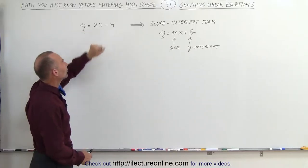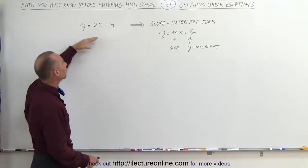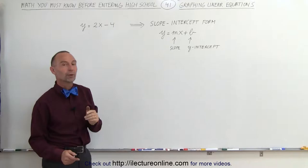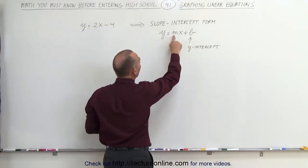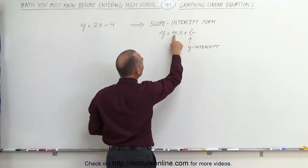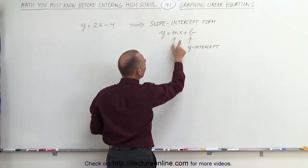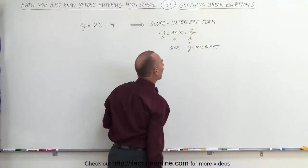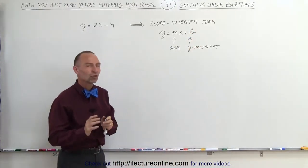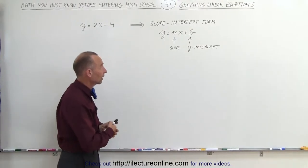We have y equals 2x minus 4, placed in what we call the slope-intercept form. The general form of that equation is y equals mx plus b, where m, the coefficient in front of the variable x, is the slope, and b, the number by itself, is called the y-intercept. We'll get to that in just a moment to see what that really is and what it represents.